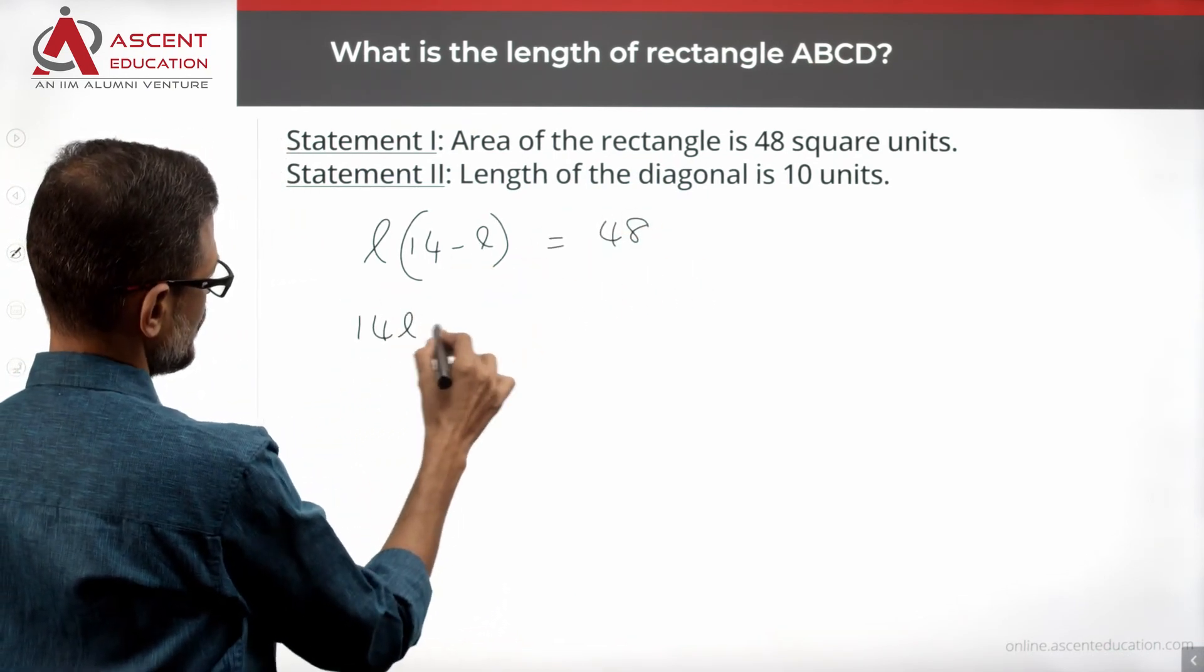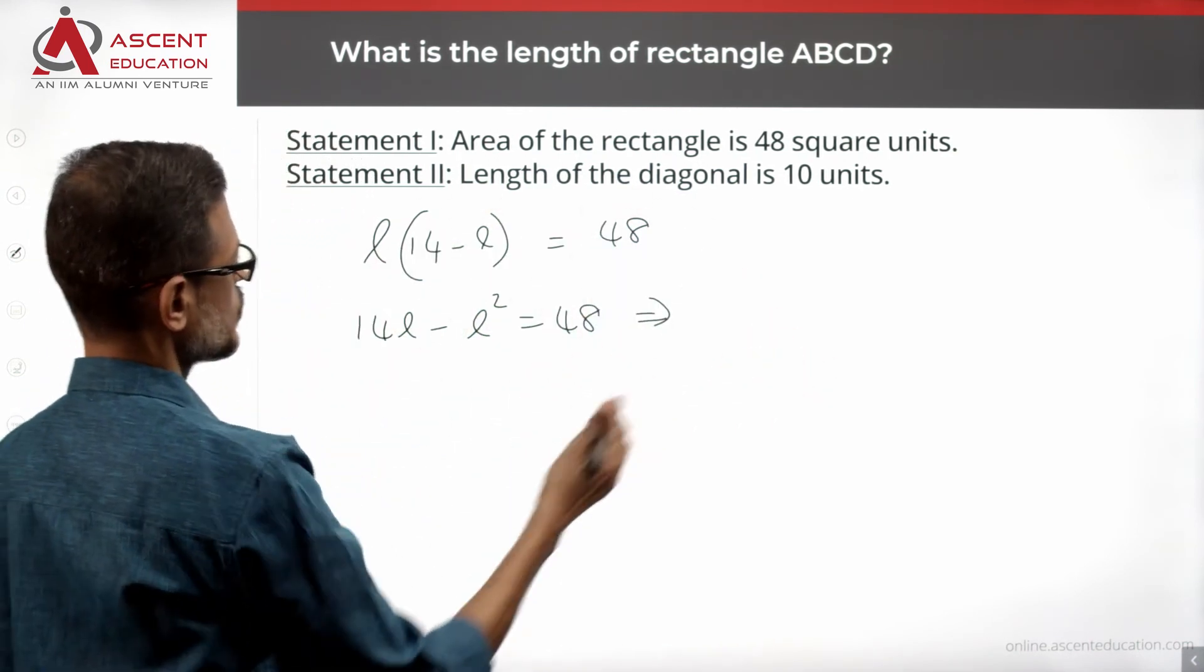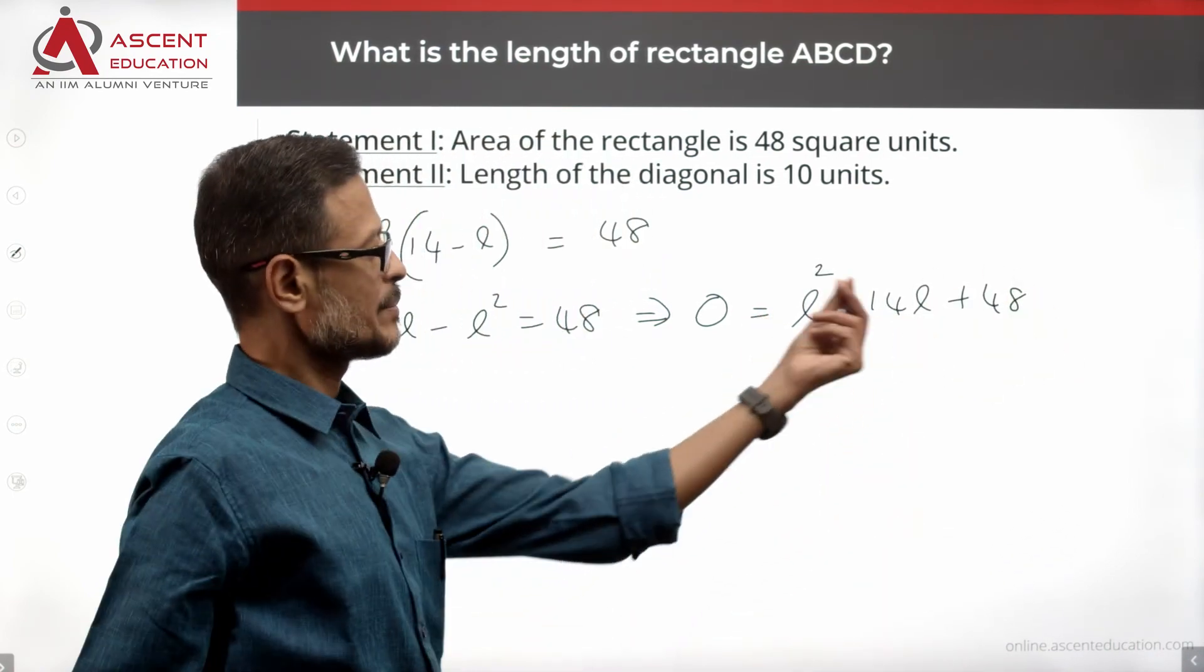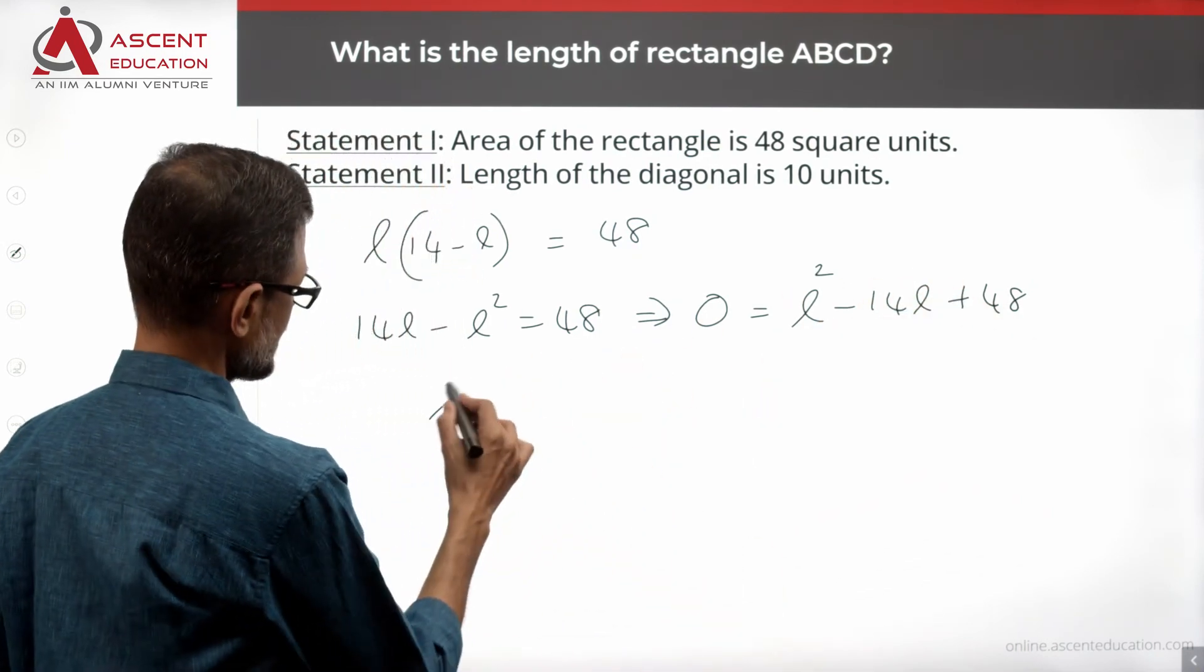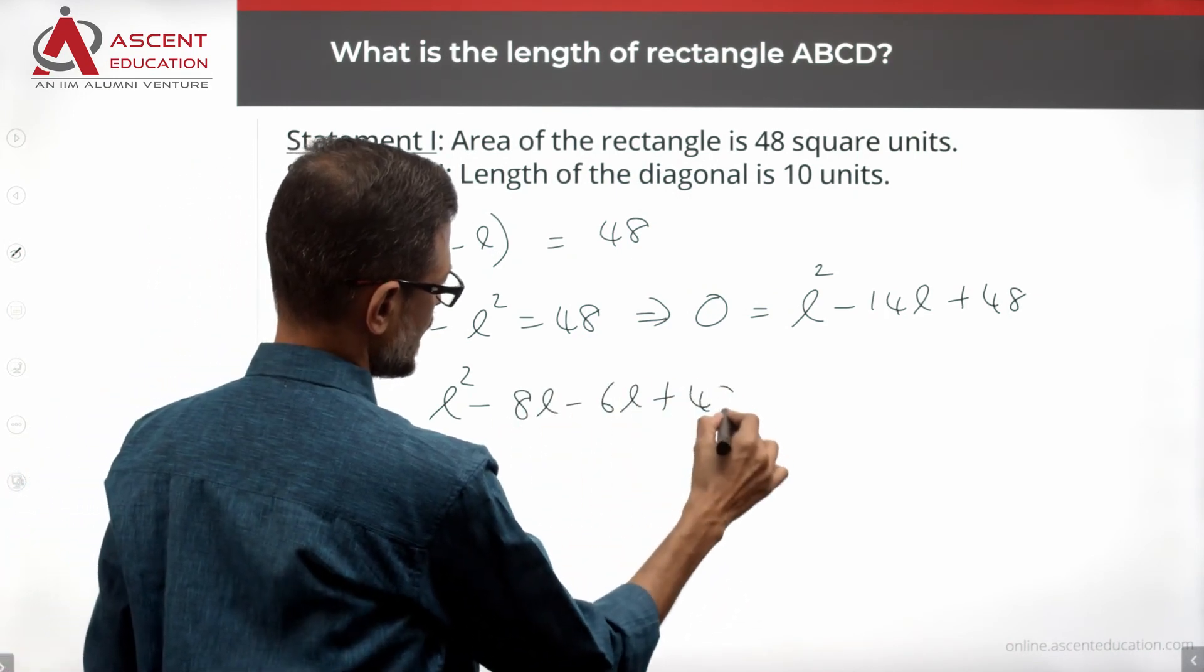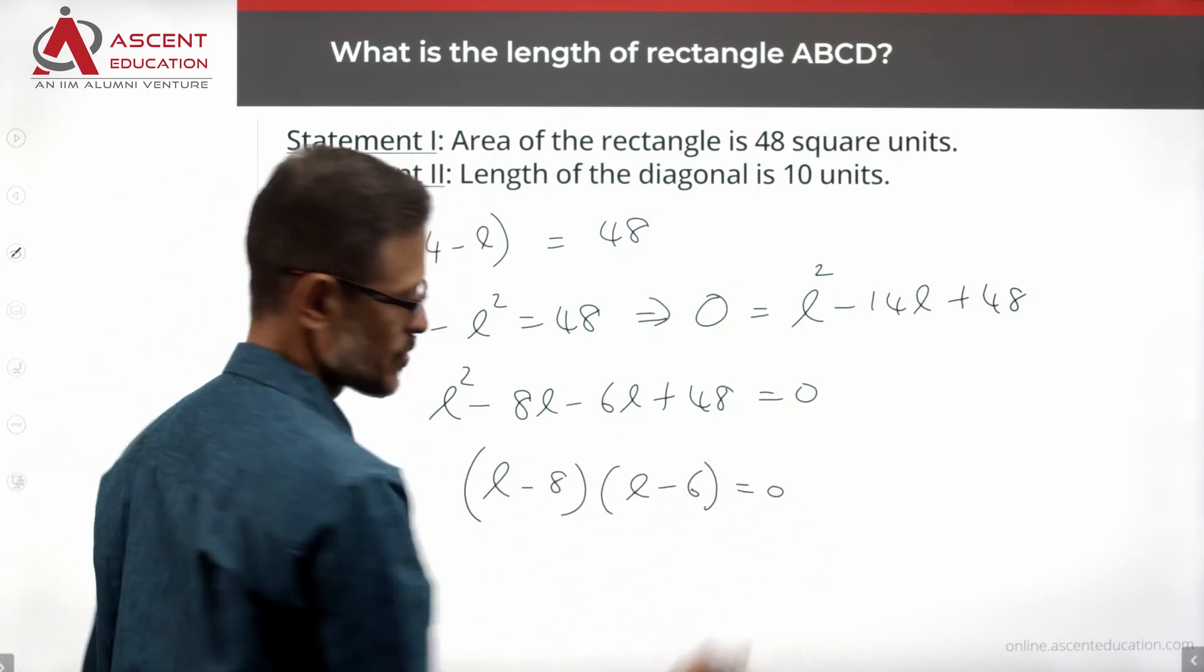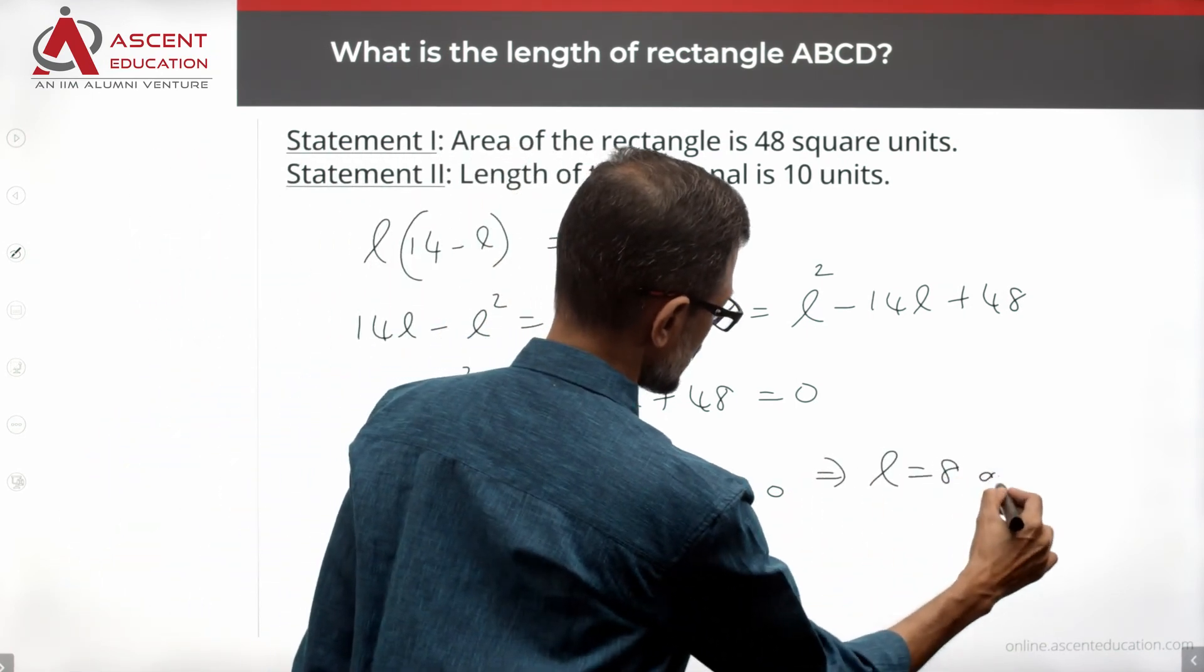Expand: 14L minus L square is equal to 48. Moving everything to the right-hand side, 0 is equal to L square minus 14L plus 48. L square minus 14L plus 48 equals 0 is a quadratic equation. Factorize as L square minus 8L minus 6L plus 48 is equal to 0. You will get L minus 8 into L minus 6 is equal to 0. So length could be 8 or length could be 6.